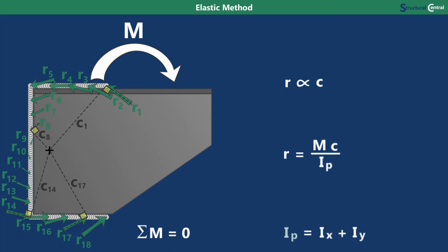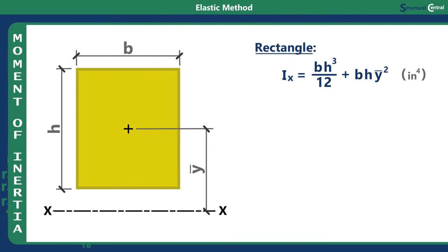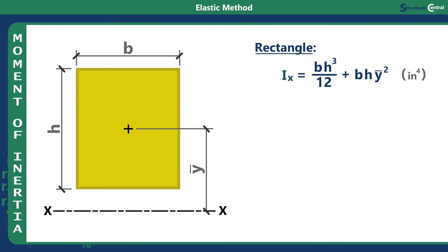The polar moment of inertia for the weld group IP can be determined by adding the moment of inertia about the horizontal axis IX to the moment of inertia about the vertical axis IY. Now determining the moment of inertia for the weld requires a short discussion. For a rectangle, the moment of inertia about an axis is equal to the base times the height cubed over 12, plus the base times the height times the distance from the centroid squared. The first term is for the moment about an axis through the rectangle centroid, and the second term is the adjustment for the actual axis location via the parallel axis theorem.